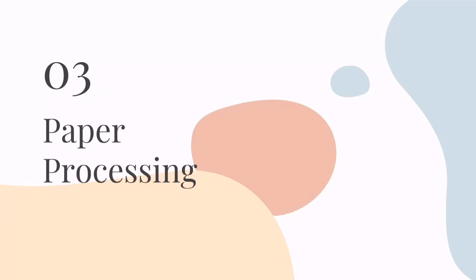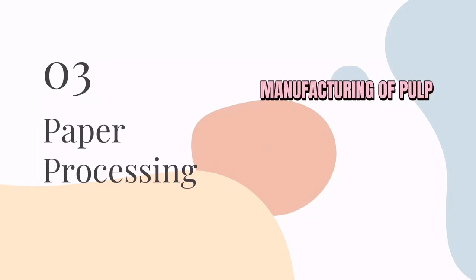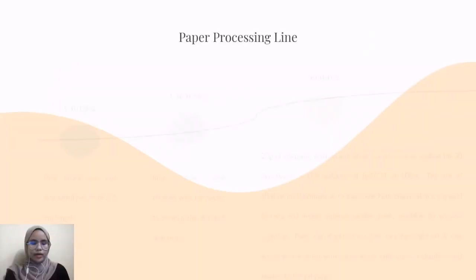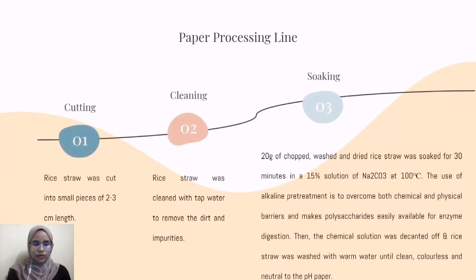Next, we will be presenting about the paper making process. There are three stages of producing paper: manufacturing of pulp, preparation of products, and development of paper. Next is the technique for paper making preparation from rice straw.